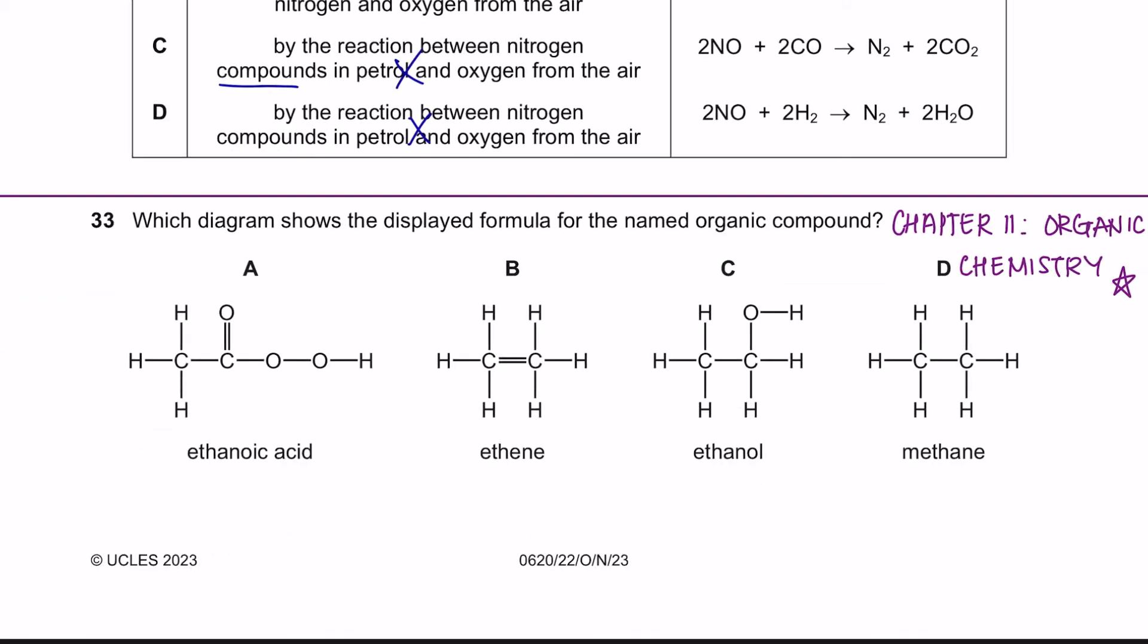Question 33 onwards is from chapter 11. Which diagram shows the displayed formula for the named organic compound? Ethanoic acid has a functional group of COOH. And this here shows a functional group of COO and another extra OH. So this is wrong.